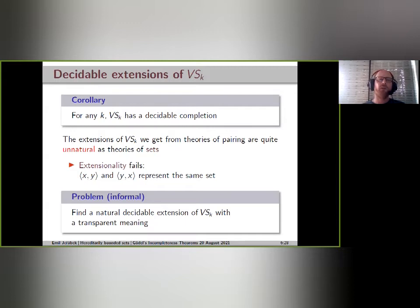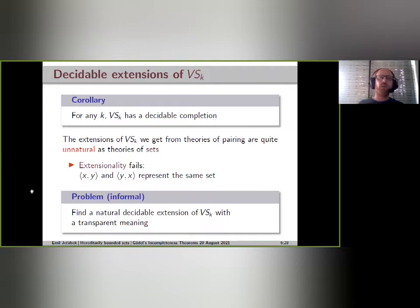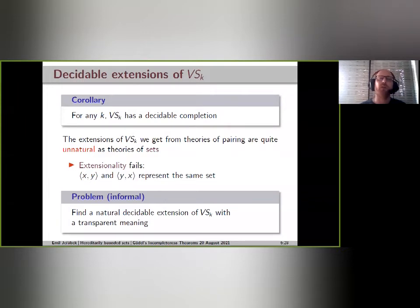All these fragments VSk have decidable completions. However, the extensions we get in this way are quite opaque and unnatural if we think of them as theories of sets — for instance, extensionality fails badly because ordered pairs xy and yx are different pairs yet represent the same set. So we can formulate an informal problem: find a natural, decidable extension of VSk that has a transparent meaning in the sense that we can really think about the objects as sets in some meaningful way.